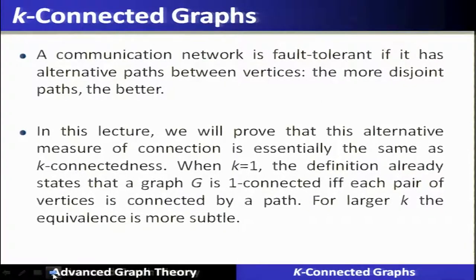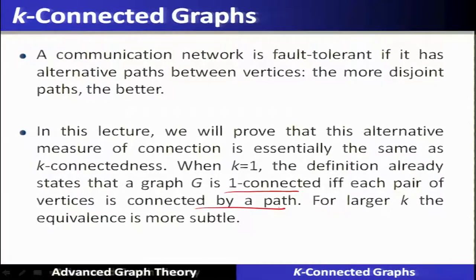When K becomes 1, that is 1-connected graphs, we have already discussed. A graph is 1-connected if and only if each pair of vertices is connected by a path — that definition we have already seen. If the entire graph is connected between any two pair of vertices, if there is a path, then we can generalize this 1-connectedness in terms of K, a larger value of K, meaning K is greater than or equal to 1, and then we define K-connected graphs.